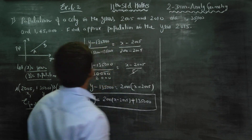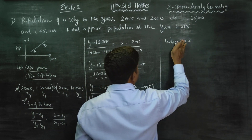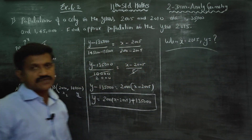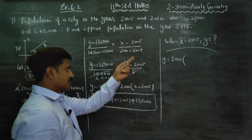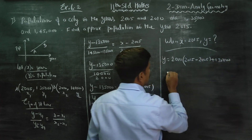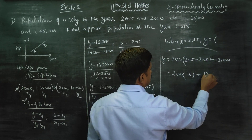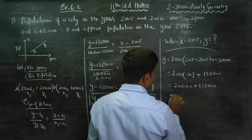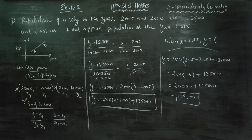Next, find the approximate population in the year 2015. When x is equal to 2015, what is y? Substitute x = 2015: y = 2000 × (2015 - 2005) + 1,35,000 = 2000 × 10 + 1,35,000 = 20,000 + 1,35,000 = 1,55,000. So the population in the year 2015 will be 1,55,000.